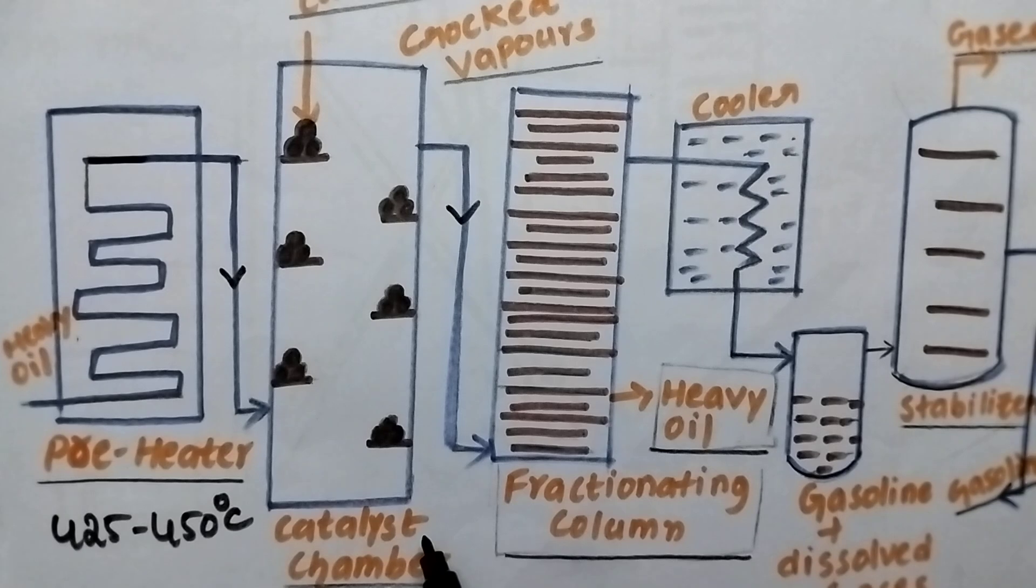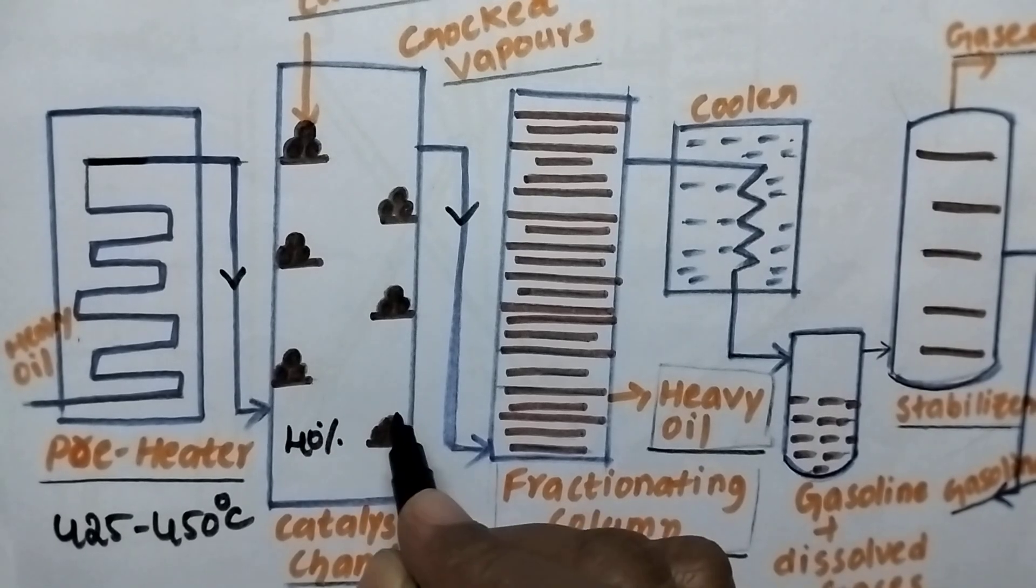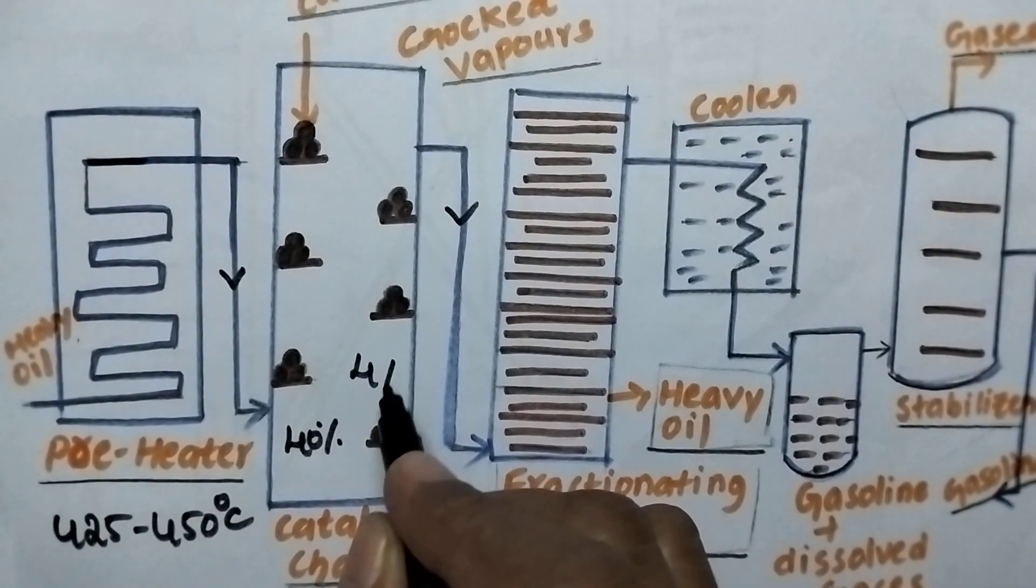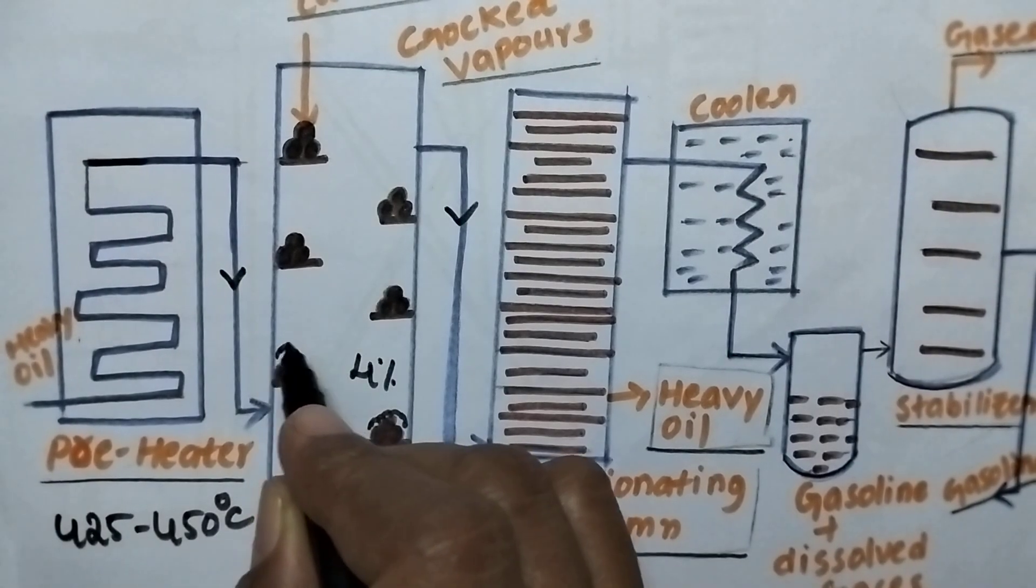So in this catalyst chamber the cracking takes place especially the 40% of cracking of the material takes place and always the 4% of the carbon will be deposited on the catalyst.